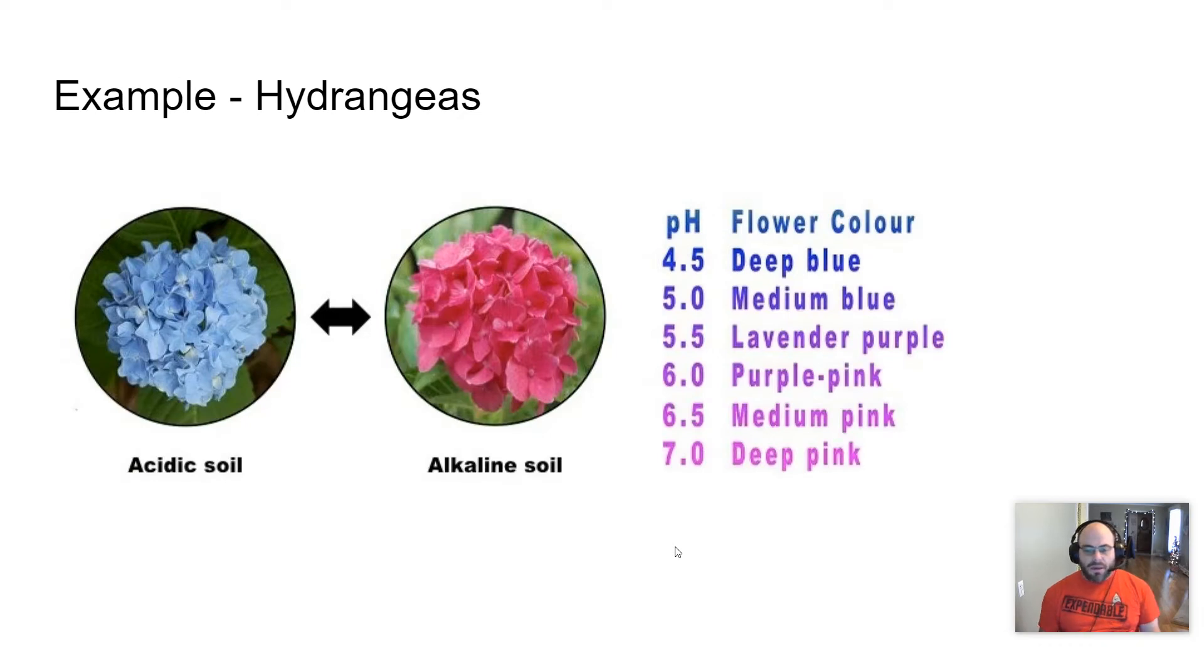Another example are hydrangeas. These are popular flowers in our part of the world. And based on the acidity of the soil, the phenotype of the plant will actually change. That color comes from nutrients in the soil and the acidity affects that. And so it can directly affect the color of the plant. You can see there on that chart, you can actually manipulate the color of your hydrangeas by manipulating the pH of the soil, which I think is pretty fascinating.